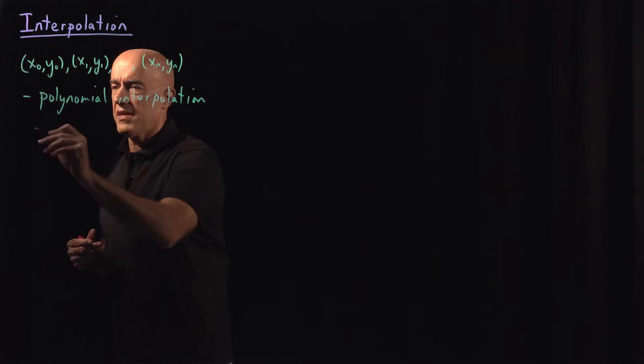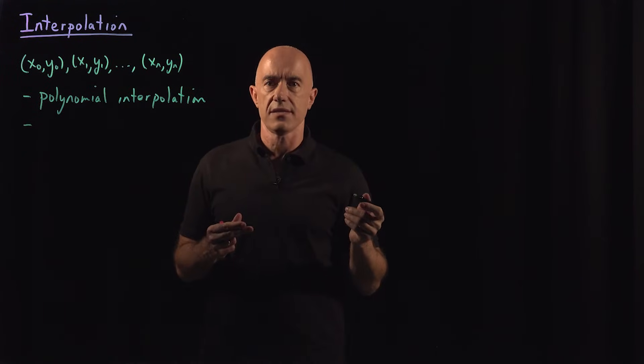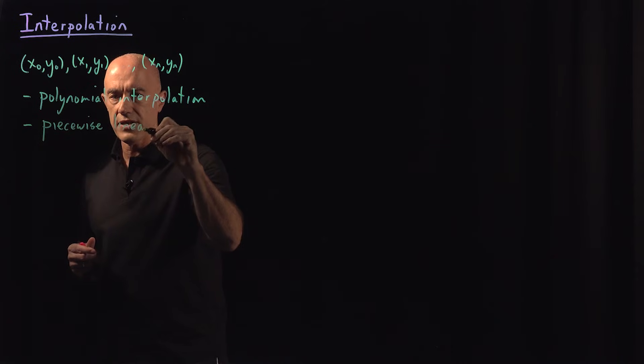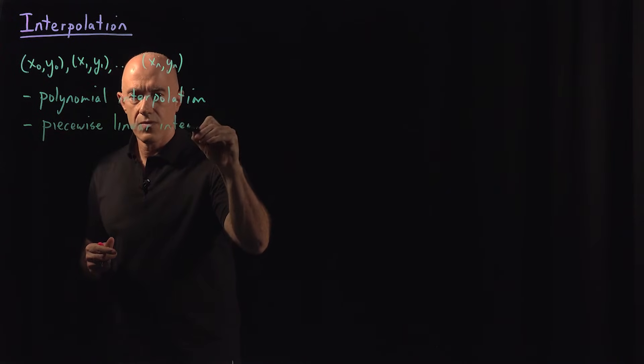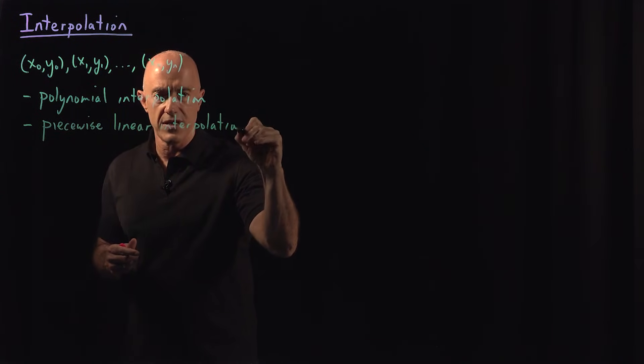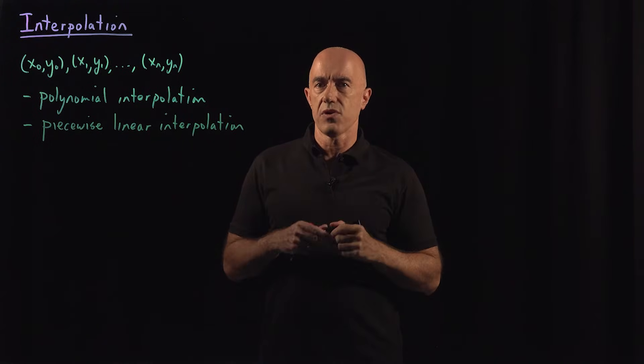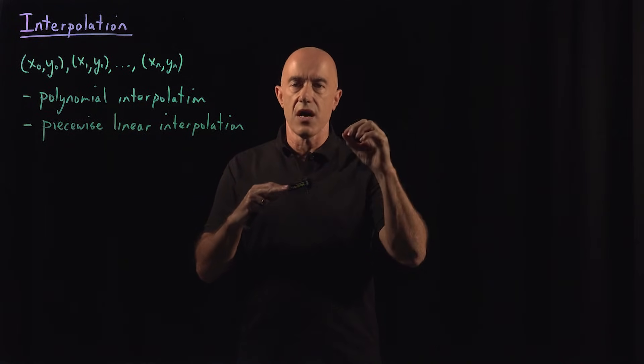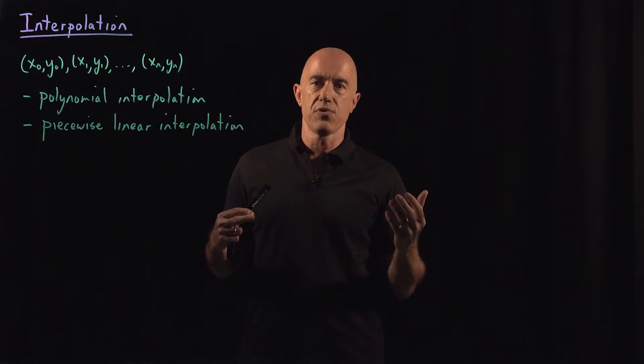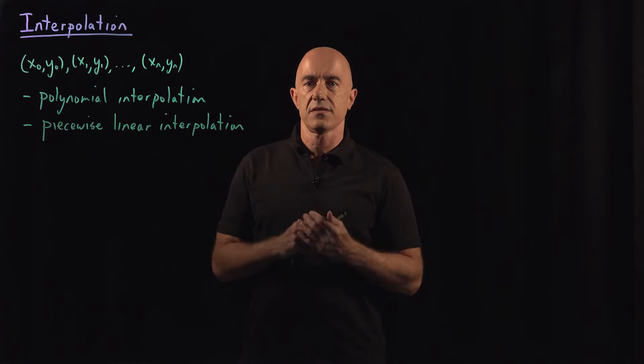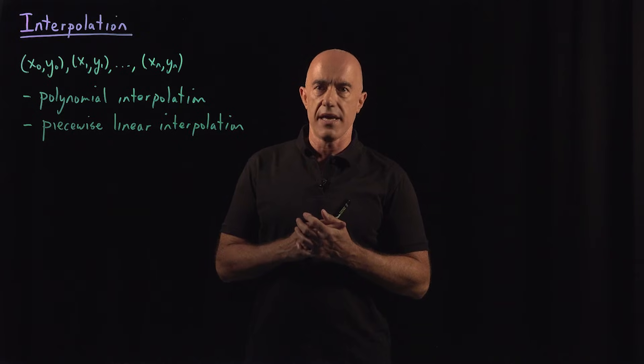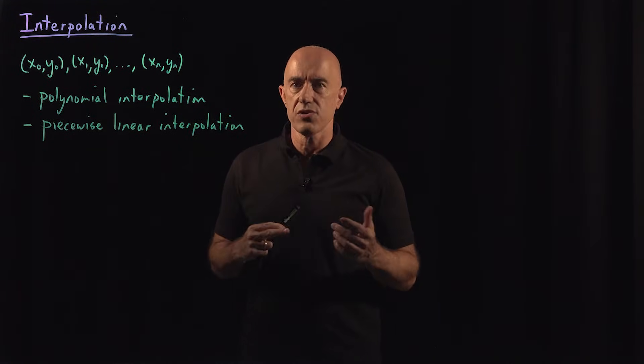To beat the wiggle problem, you do piecewise interpolation. The standard ones are piecewise linear interpolation. We can talk about that in this video. That's rather straightforward. Between every two consecutive points, you draw a straight line. So you're just drawing a straight line between points. That's what the program plot does, the function plot does in MATLAB. You give it a bunch of points and it just connects them by a straight line. That's piecewise linear interpolation.